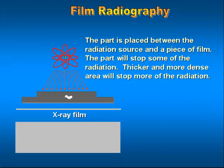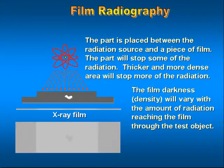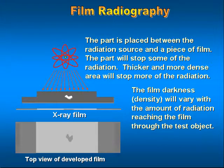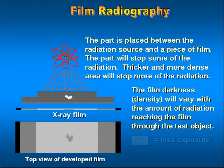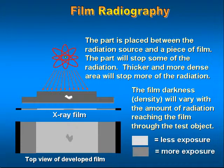Thicker and more dense areas will stop more of the radiation. The film darkness, which is density, will vary with the amount of radiation reaching the film through the test object. Lighter areas of the film indicate less exposure, while darker areas of the film indicate more exposure.